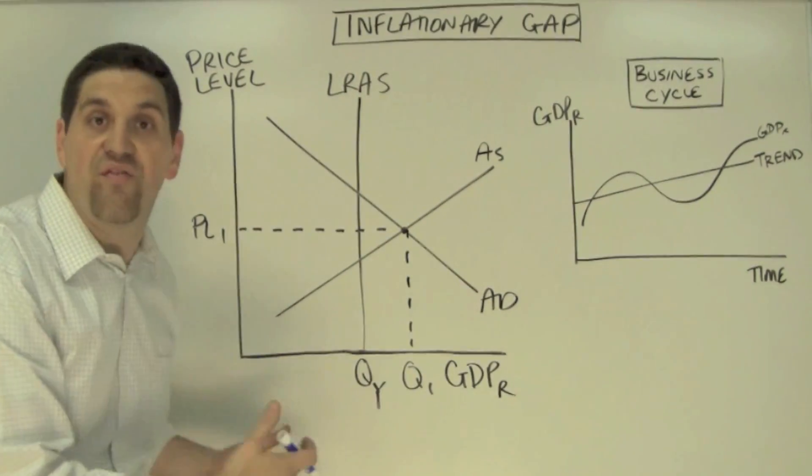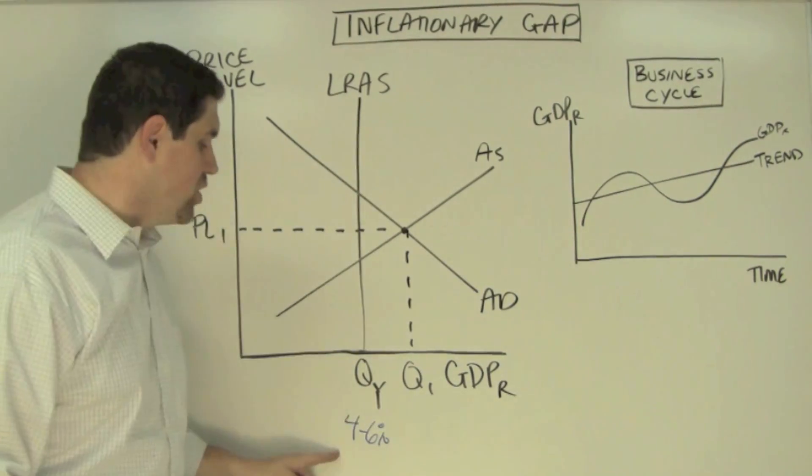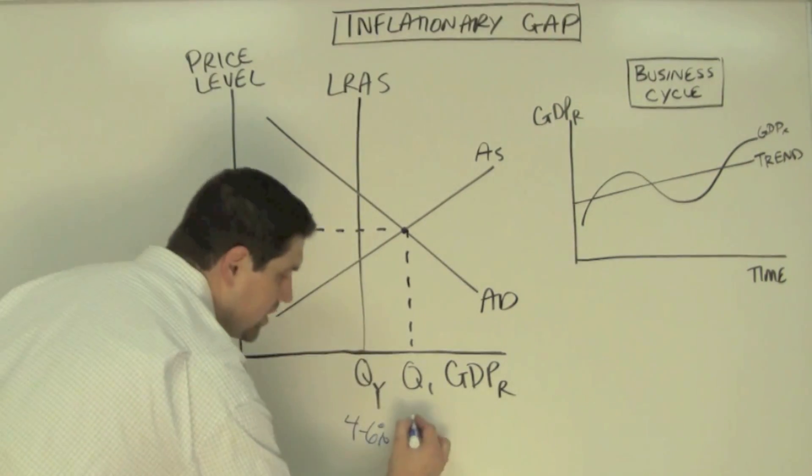The long run aggregate supply curve represents the idea of full employment, so 4% to 6% unemployment is the long run. So this GDP right here, we have like 2% unemployment.